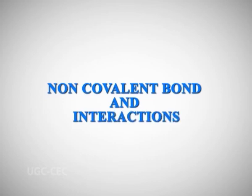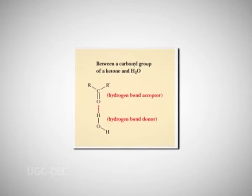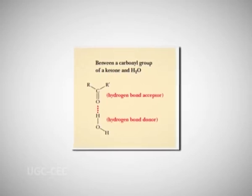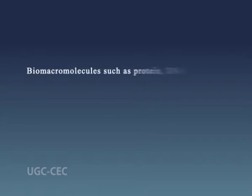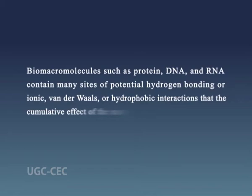Next are non-covalent interactions. Hydrogen bonding, ionic, hydrophobic, and Van der Waals interactions are the non-covalent interactions. They are very much weaker than covalent bonds. Biomacromolecules such as protein, DNA, and RNA contain many sites of potential hydrogen bonding, ionic, Van der Waals, or hydrophobic interactions, such that the cumulative effect of many small binding forces can be enormous. For biomacromolecules, the most stable structure is usually that which has maximum weak interactions.